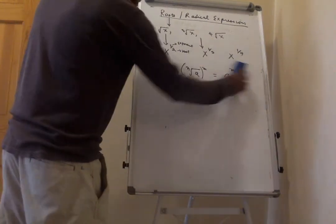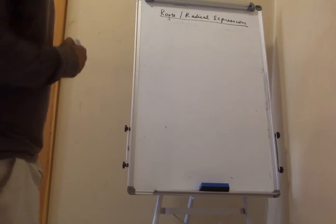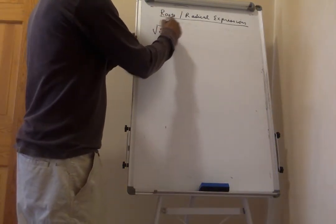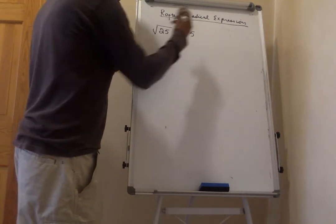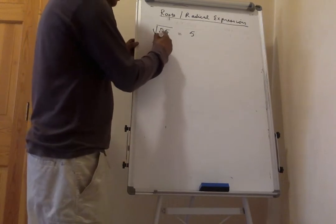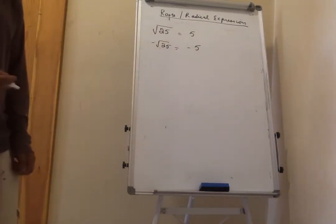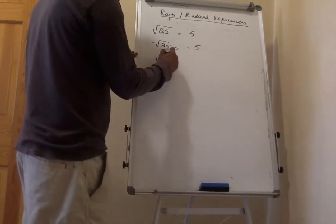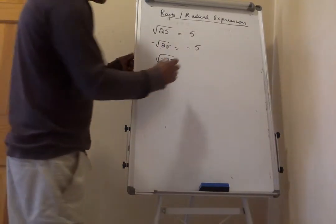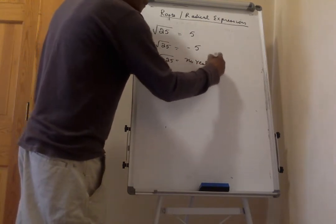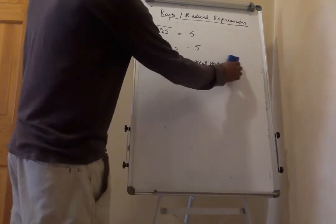Now, simplifying rational expressions — meaning roots. The square root of 25 is 5 because 5 squared is 25. Negative the square root of 25: first find the square root of 25 and plug in a negative. But the square root of negative 25 has no real root, because no number multiplied by itself gives a negative outcome.